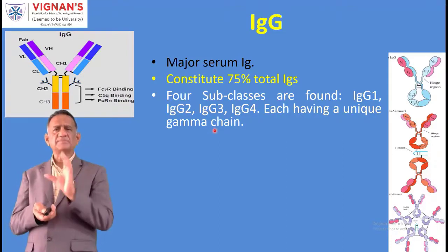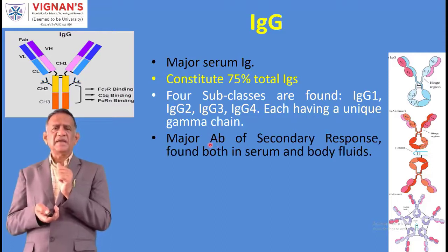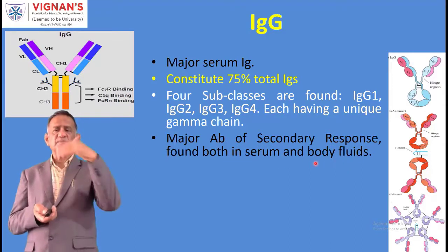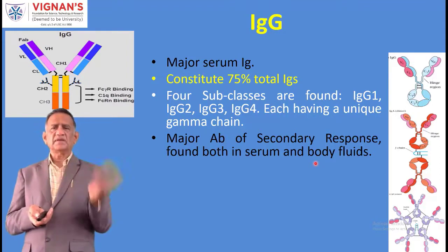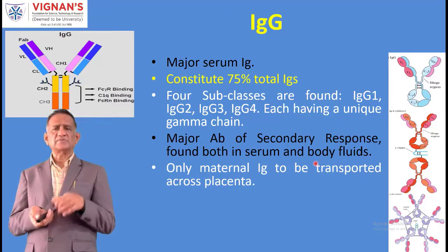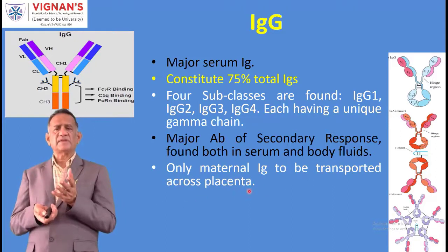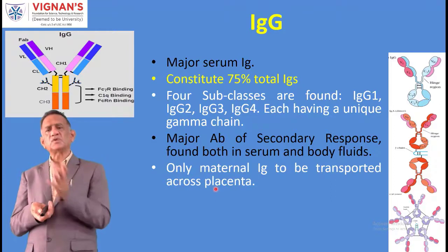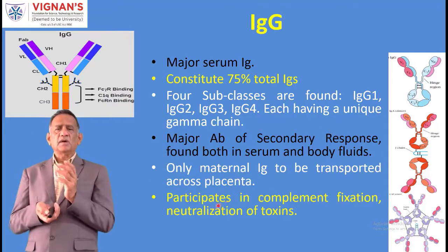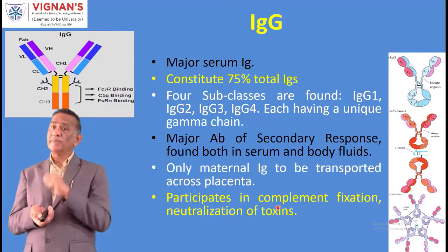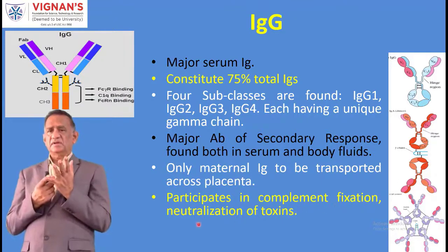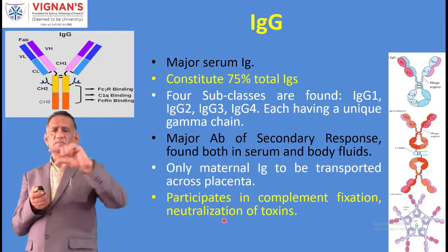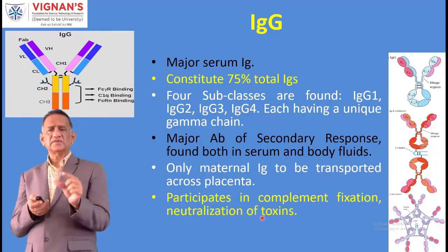IgG is the major antibody of the secondary immune response, found in both serum and body fluids. In the primary response, only IgM is present initially. IgG is also the maternal immunoglobulin transported across the placenta to protect the newborn, and it also passes through mother's milk. IgG participates in complement fixation, neutralization, agglutination, and phagocytosis - the major defense functions to eliminate bacteria, viruses, and protozoa.